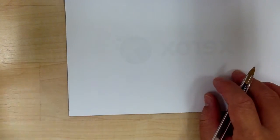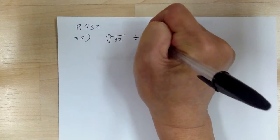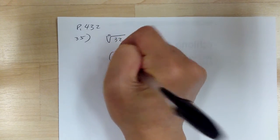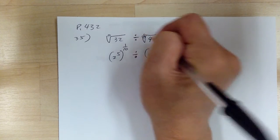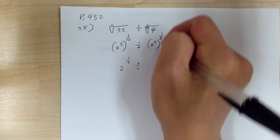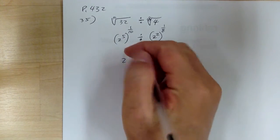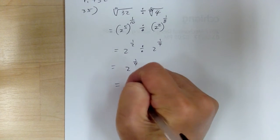Let's go to number 35. You have the tenth root of 32 divided by the eighth root of 4. Convert to lower base: 32 is 2 to the 5, and tenth root is 1 tenth power; divided by 4 is 2 squared, and eighth root is 1 eighth power. So 2 to the 5 over 10 gives 1 half power, and 2 times 1 eighth gives 1 over 4. When you divide, subtract the exponents: 1 half minus 1 fourth is 1 fourth. So this equals the fourth root of 2.